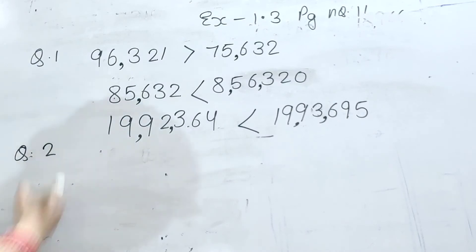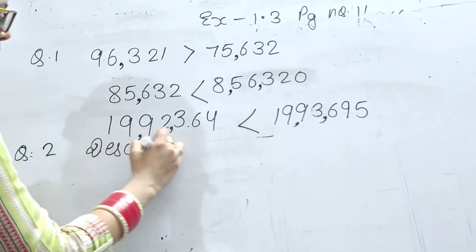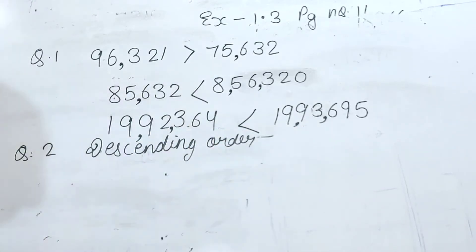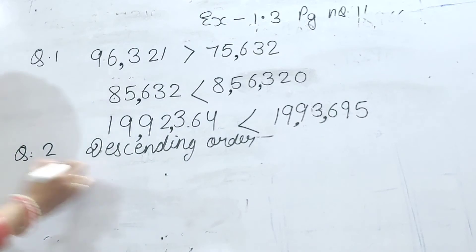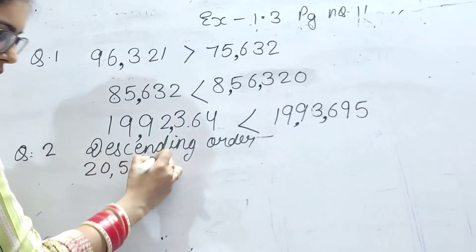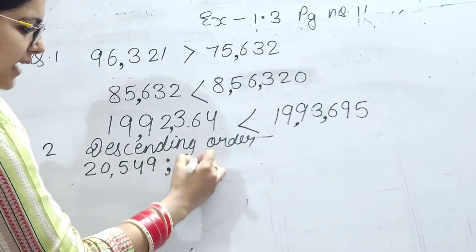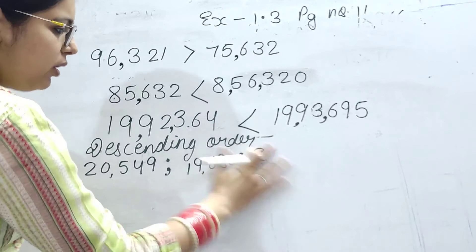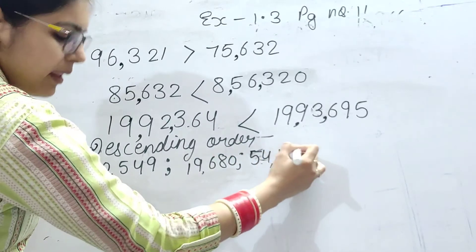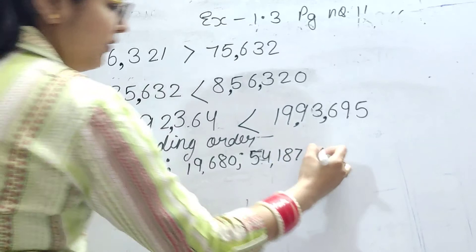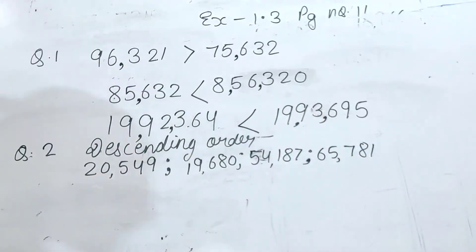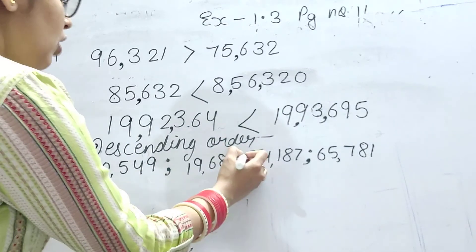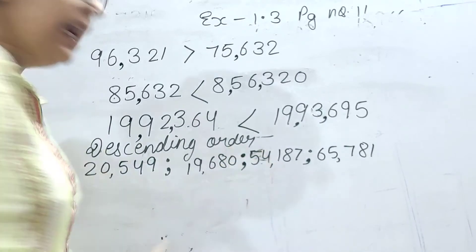Question number two mein likhna hai descending order mein. Numbers ko descending order mein likhna hai. Numbers hain: 20,549; then 19,680; then 54,187; and then 65,781. In charo numbers ko descending order mein likhna hai. Descending order matlab bade se chota.